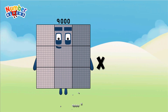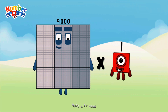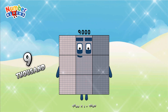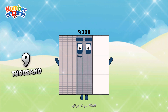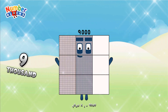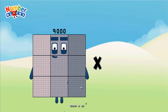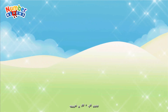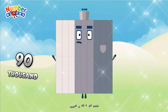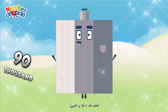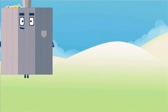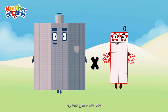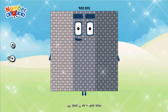9,000 × 1 equals 9,000. 9,000 × 10 equals 90,000. 90,000 × 10 equals 900,000.